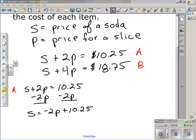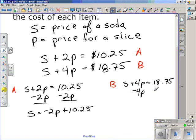And now I'm going to take equation B and I'm going to solve it for S too. S plus 4P is equal to $18.75, and I'll solve that by subtracting 4P from both sides. So S is equal to the opposite of 4P plus $18.75.